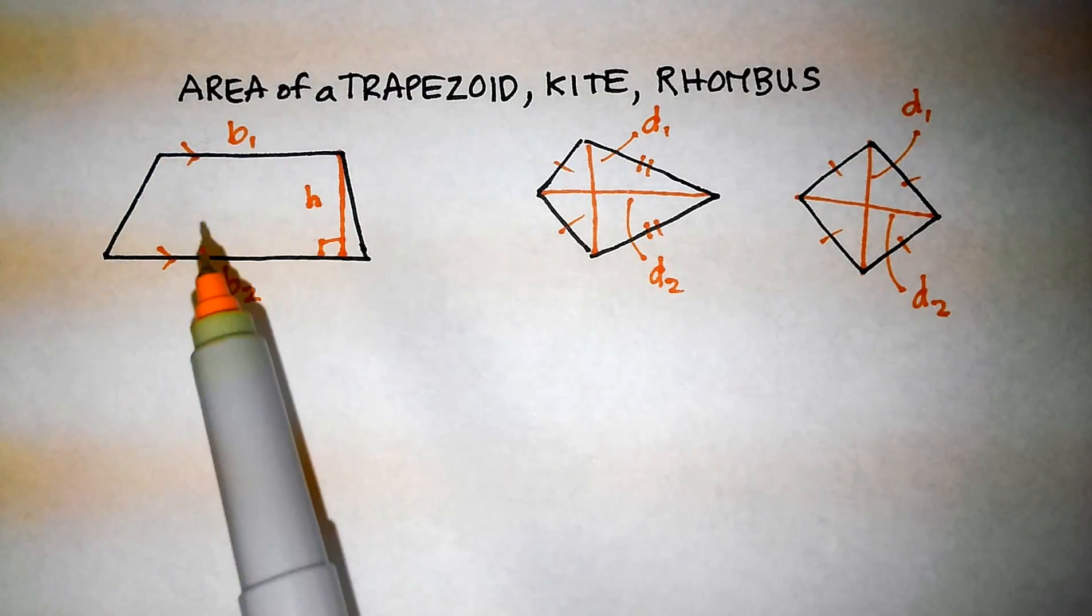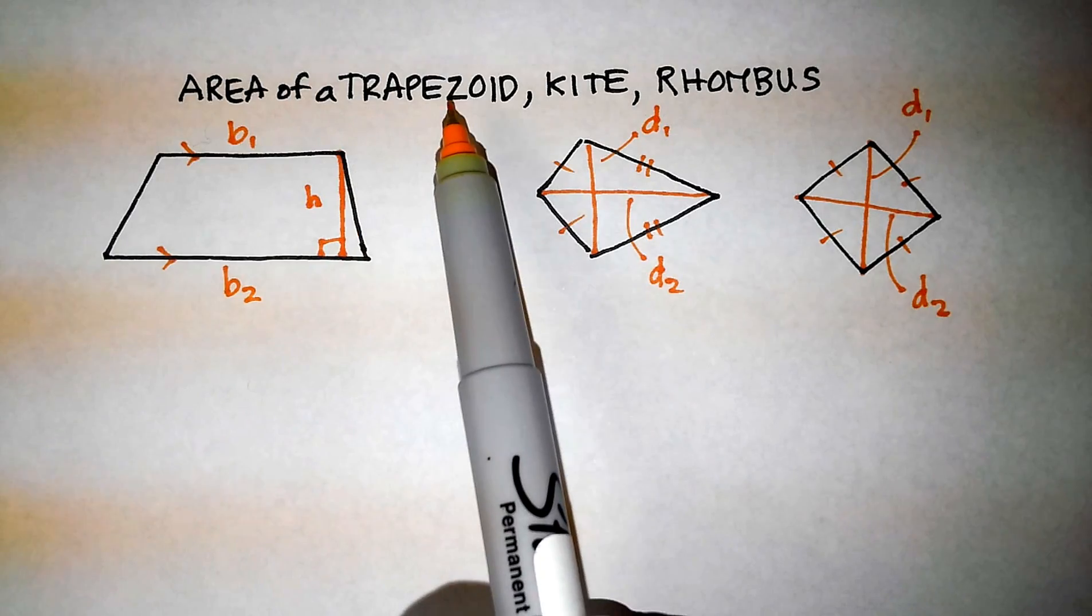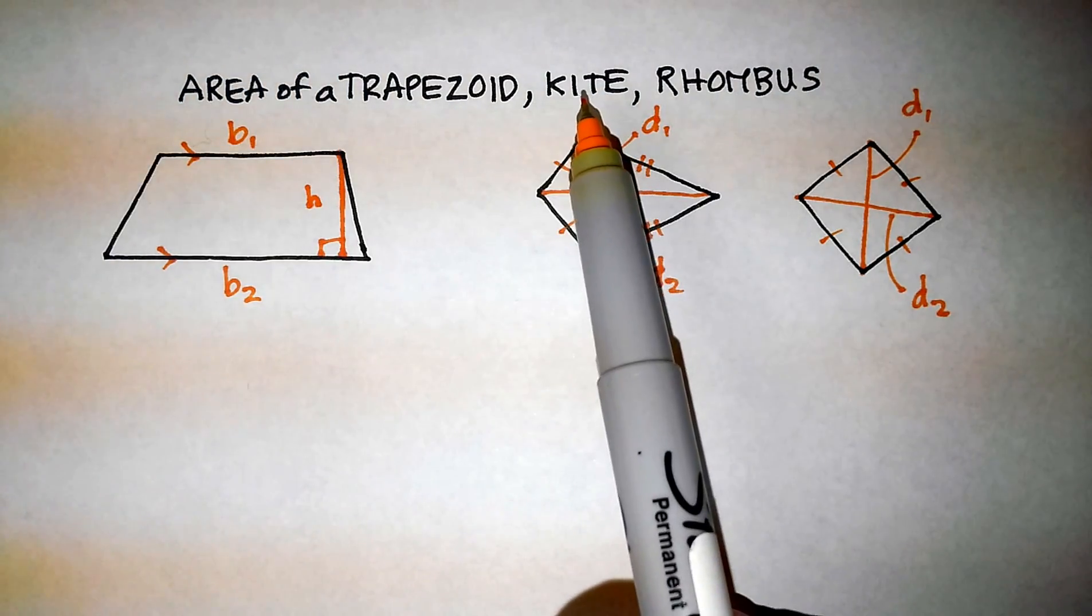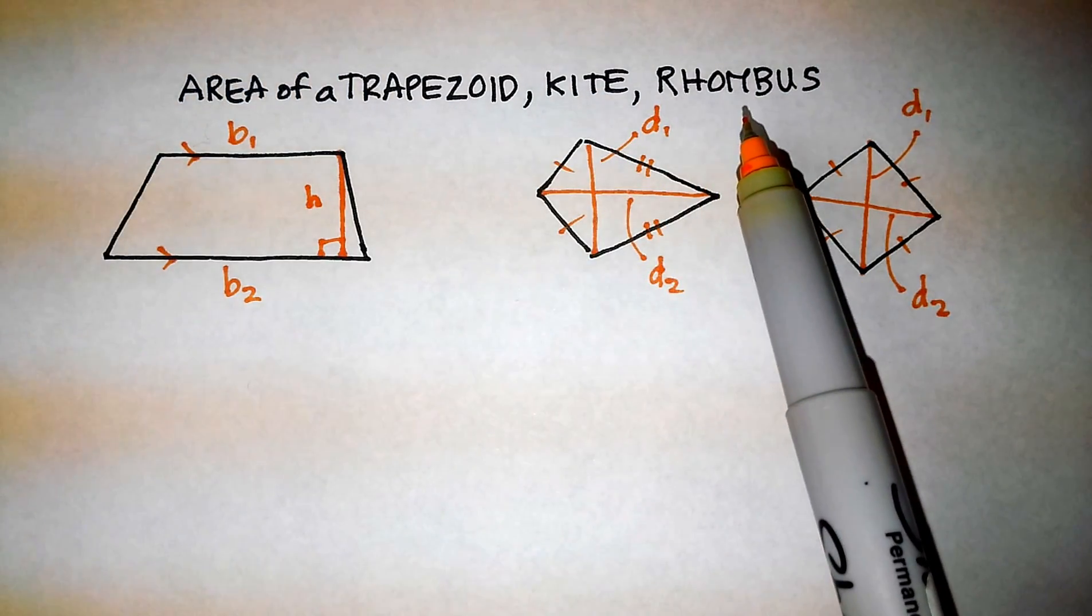Okay, so in this video we're going to go over how to find the area of a trapezoid, an area of a kite, and an area of a rhombus.